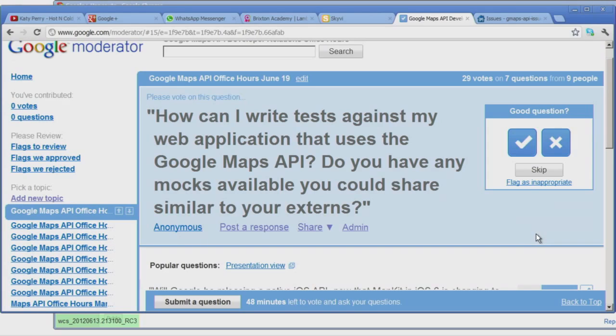So it looks like we don't have any questions from the Hangout. So maybe if we can mute all those folks. And then I'll just take a look at the moderator, where we have a few questions here that people submitted beforehand. So the first question, how can I write tests against my web application that uses the Google Maps API? Do you have any mocks available you could share similar to your externs?